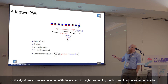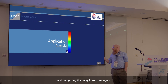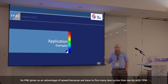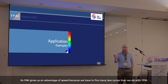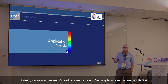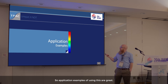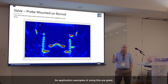We are concerned with the ray path through the coupling medium and into the inspection medium, computing the delay-and-sum yet again. PWI gives us the advantage of speed because we have to fire many fewer cycles than with TFM, and that also means less data overhead. Application examples of using this are great.